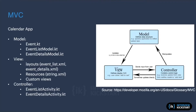The event list activity can be our main activity, and we'll also have an event details activity. Whenever something happens in the view — in the event list activity or details activity — if the event list activity needs to start the event details activity, it will do so and tell the model to update the view.